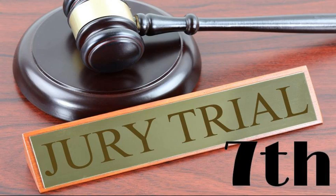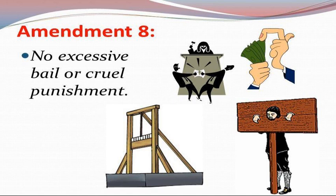The Eighth Amendment protects an accused person's rights both before and after trial. Before a trial, it forbids a judge from demanding excessive bail. And after a trial, if a person is found guilty, the Eighth Amendment forbids excessive fines and cruel and unusual punishments.